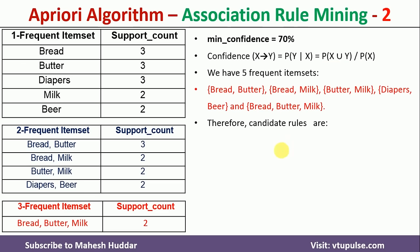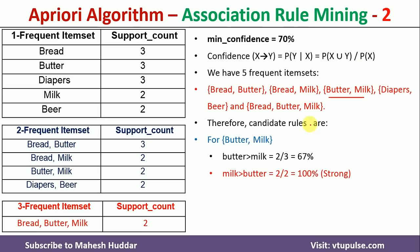Next, butter and milk: the rules are butter → milk and milk → butter. Butter and milk were bought together 2 times; butter appears 3 times. So 2/3 = 67% — not a strong rule. For milk → butter: milk and butter were bought together 2 times; milk appears 2 times. So 2/2 = 100% — it is a strong rule.